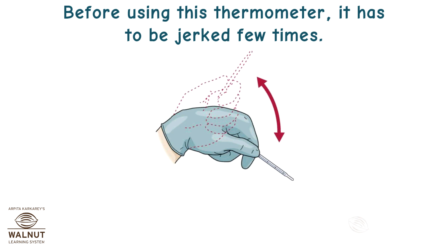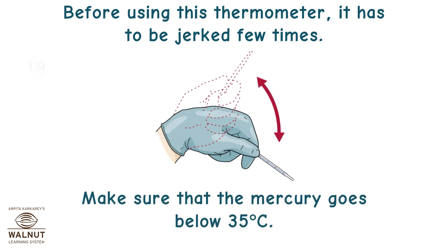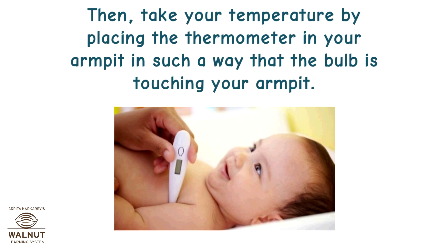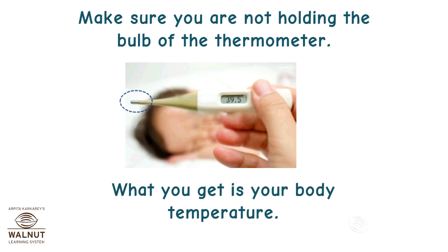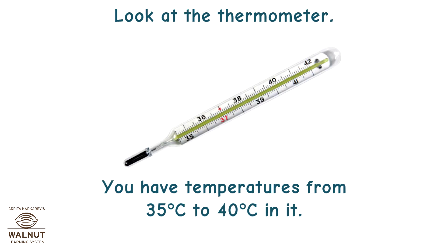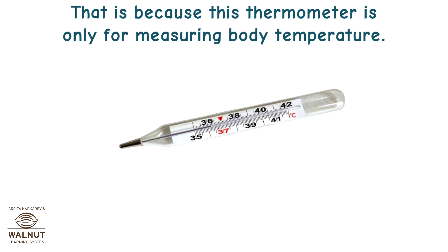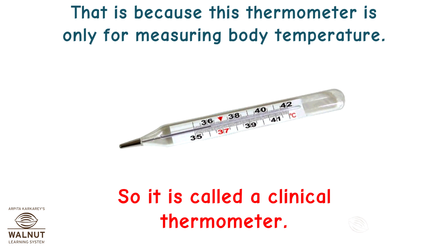Before using the thermometer, it has to be jerked a few times. Make sure that the mercury goes below 35 degrees Celsius. Then take your temperature by placing the thermometer in your armpit so that the bulb is touching your armpit. Sit still like that for two minutes. Then take the thermometer out and check the reading. Make sure you are not holding the bulb of the thermometer. What you get is your body temperature. This thermometer has temperatures from 35 to 40 degrees Celsius because it is only for measuring body temperature, so it is called a clinical thermometer.